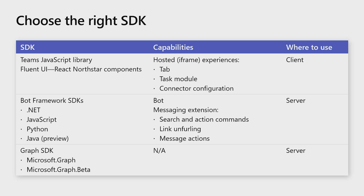If you were to generate the starter code for a bot or a messaging extension, the toolkit will include the corresponding SDK for the Microsoft Bot Framework. This SDK is available in various languages. The .NET, JavaScript, and Python SDKs are ready for production release, while a Java SDK is in development and is currently in preview. We also have libraries that help you use Microsoft Graph. Note that there's a separate one for Graph endpoints that are still in beta, so when you're taking advantage of these APIs, remember to include the beta version of the SDK inside your application.